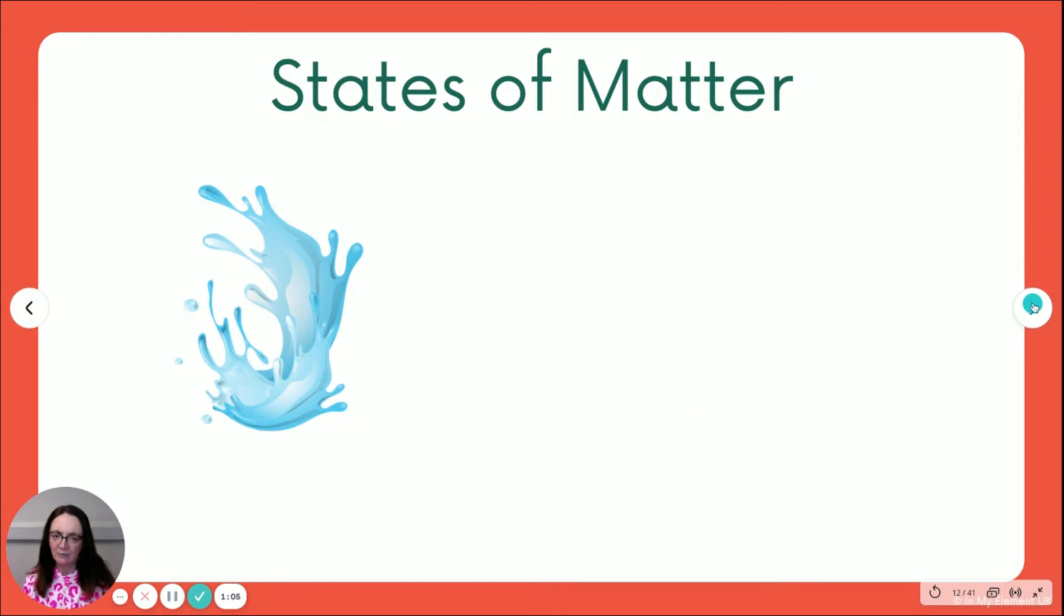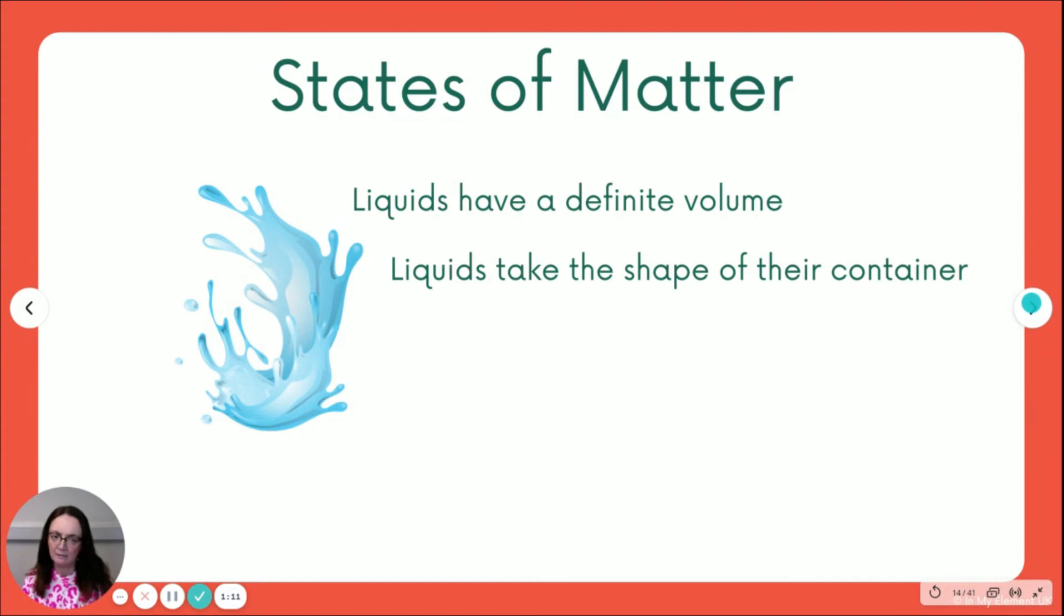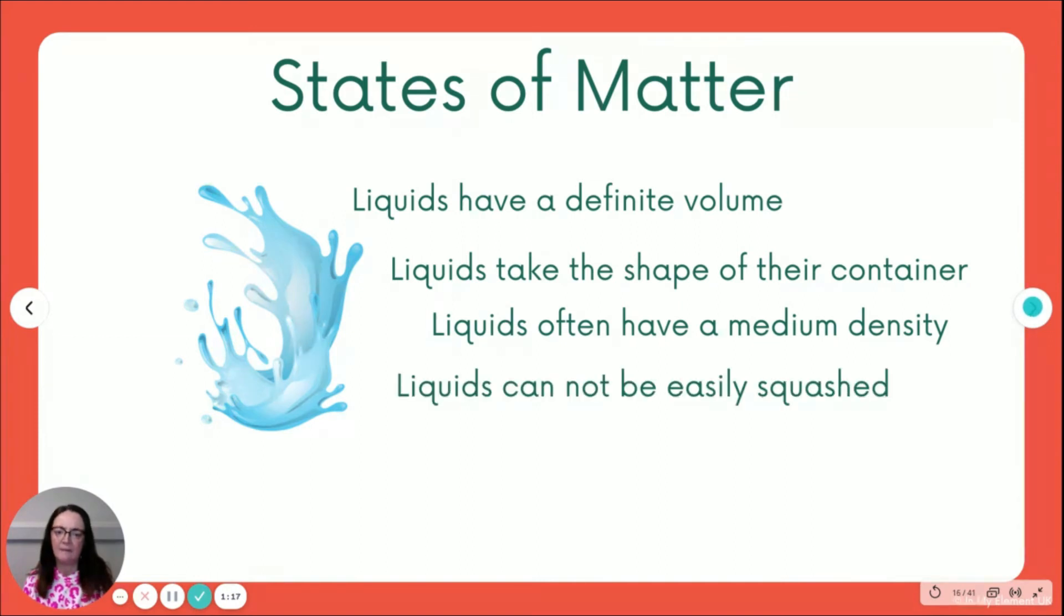So for the liquid, we've got a definite volume. They take the shape of their container and they have a medium density. They cannot be easily squashed. You can't squish a liquid into a particular container. But they do flow.